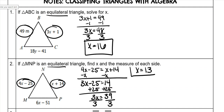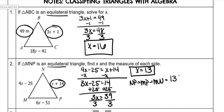It also says find the measure of each side. Well, all the sides are the same, so it doesn't matter which equation you plug it into. You just plug x into one and all three sides will be the same measure. So NP equals MP and that also equals MN. I'm going to plug into x plus 14, because 13 plus 14 is easier math. So that means all of my sides are 27.